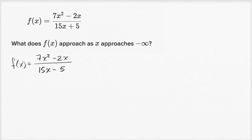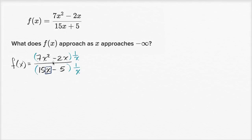The highest degree term in the denominator is just x — a single x. So let's multiply both the numerator and denominator by one over x, or equivalently divide both by x. Since we're doing the same thing to numerator and denominator, we're just multiplying by one — not changing the value. But this makes it easier to think about what happens when x becomes very, very negative.